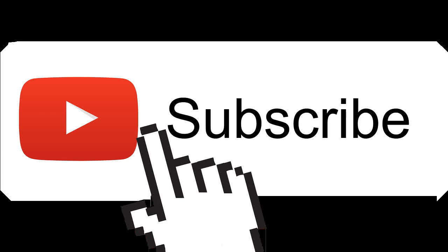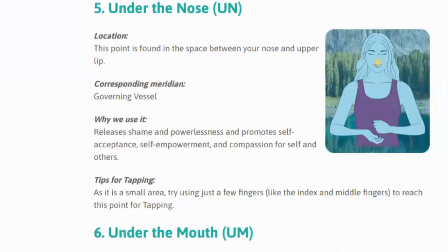In tapping, this point is for shame and self-guilt. Acceptance of oneself comes from here. If you ever feel that you have let your body down, or you are in self-guilt in any way — like feeling 'I am fat, I am short, I am less educated, more educated,' whatever comes — like 'I am not this way' — then acceptance is a very big thing at this point, and for shame too.